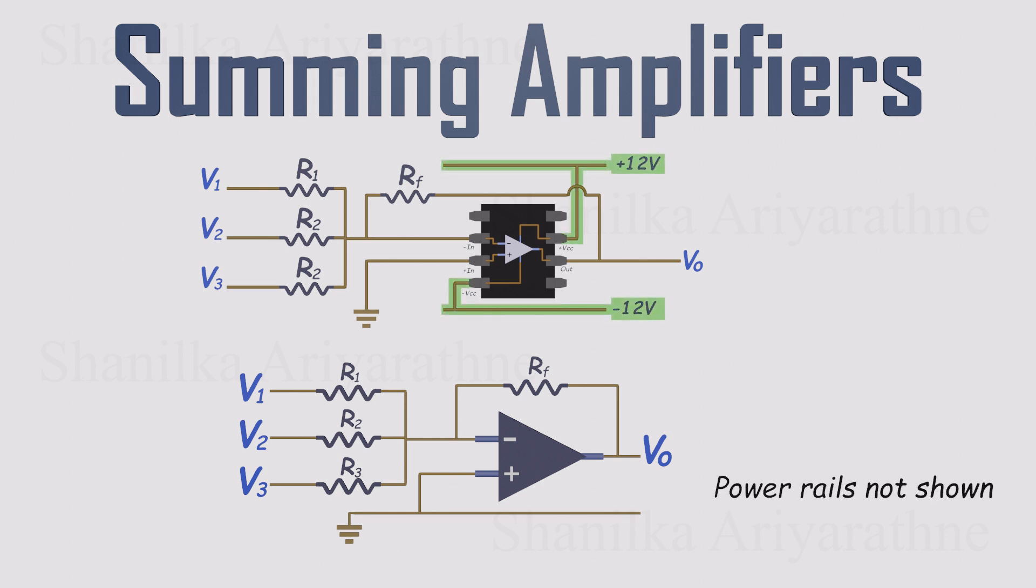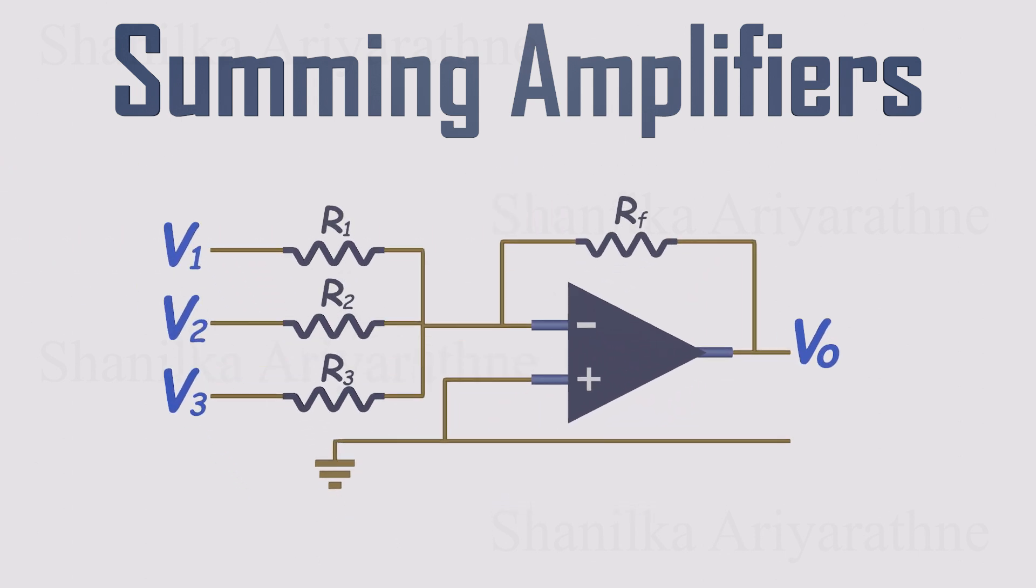In the schematic, we won't draw the dual power rails to keep things clean. But remember, they're there in the real circuit. What we do show is this. A feedback resistor from the output to the inverting input, the non-inverting input tied to ground, and each input voltage connected to the inverting input through its own resistor. That's the classic inverting summing amplifier in its simplest form.